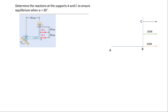At C, we want to determine the reaction. C is a hinge, so with a hinge it has two forces acting — the vertical force (y-component) and the horizontal force (x-component) acting at C. So we are going to get Cx and Cy, because the reaction at a hinge will definitely have two components: Cx and Cy.